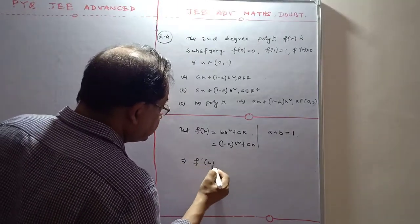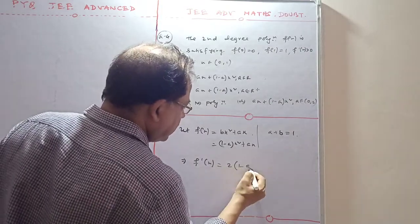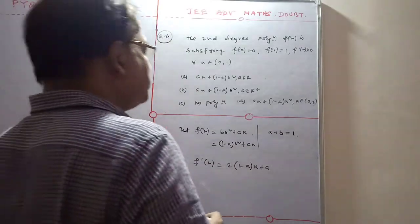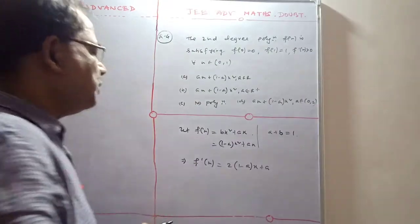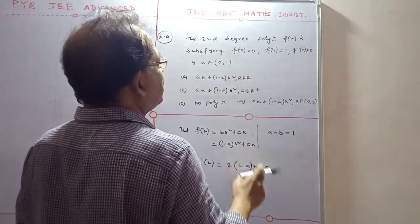So f'(x) = 2(1-a)x + a. This is positive for every x belonging to [0,1].